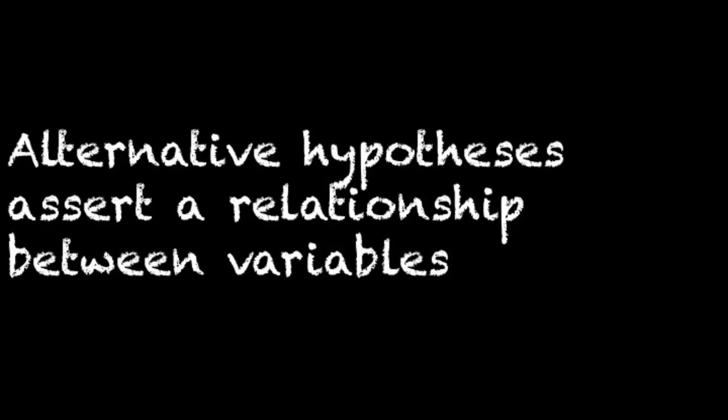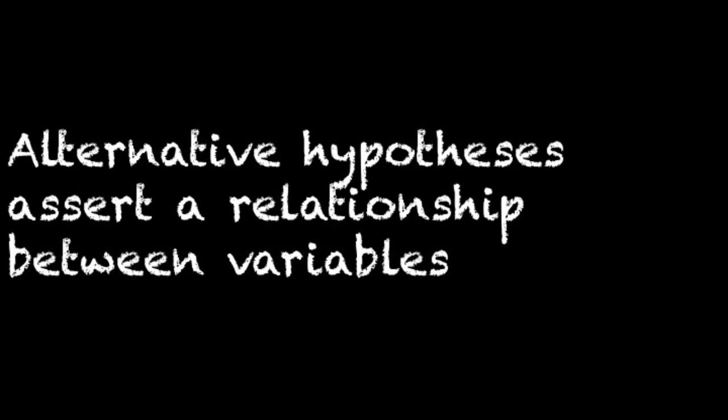These types of hypotheses, where one asserts a relationship between two variables, are called alternative hypotheses. These are contrasted with null hypotheses, where we assert that there isn't a relationship between variables.